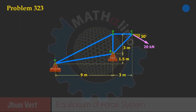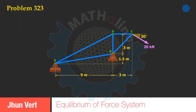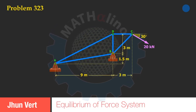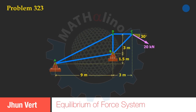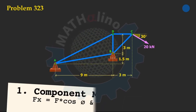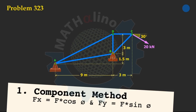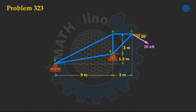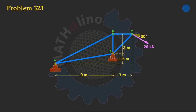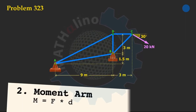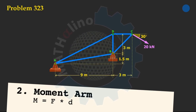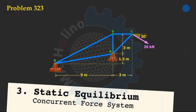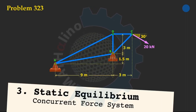Greetings, I am Junvert. In this video, let us discuss three different solutions for finding the reactions at A and B for this structure with five members. Our first solution is the component method, wherein we resolve all forces into x and y components. The second method finds the moment arm of the given force relative to our moment center. In our third method, we use the fundamental principle of statics for non-parallel forces in equilibrium.